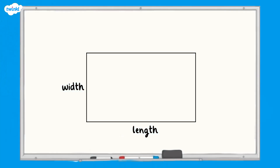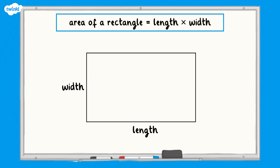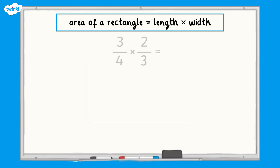We can use the area of a rectangle to help us understand how to multiply fractions. Remember, when we are calculating the area of a rectangle, we multiply the length by the width. To multiply three quarters by two thirds, we can represent it with an area model.